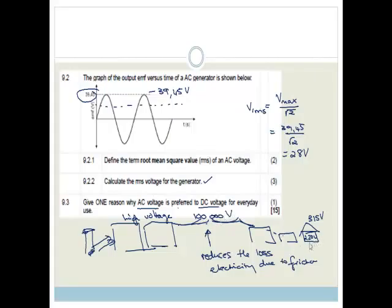So we need to step it down. And the only way we can step it up and step it down, the only way these transformers work is if we have alternating current. Transformers do not work with direct current. It has to be alternating current. And that is the one very important reason why we use AC voltage. So we can step it up and step it down so we can transfer electricity over long distances without reducing the loss of electricity.